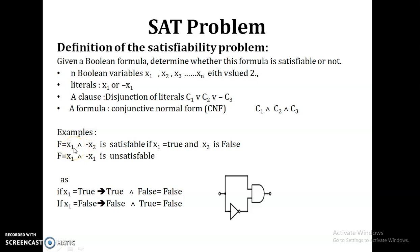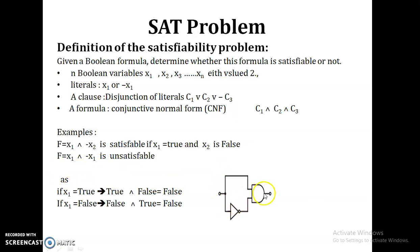So if x1 is assigned 1 and x2 is assigned 0, negation of 0 is 1, so it will produce output 1. So at any one combination, if this formula produces output 1, you can say it is satisfiable. But in the second case, if you take the expression x1 AND (negation of x1), if x1 is 1 then negation of x1 is 0, it toggles the input. So at any time, whether input is 1 or 0, this expression always produces output 0. This is an example of an unsatisfiable problem.